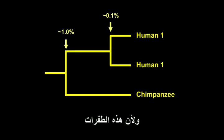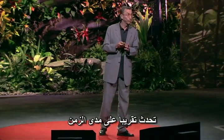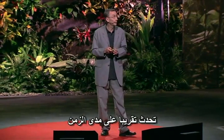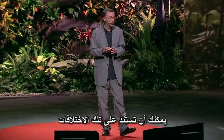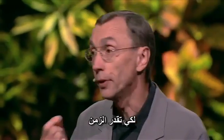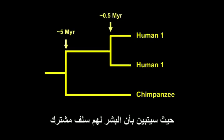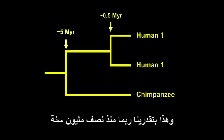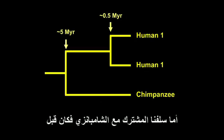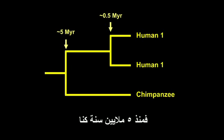Because these mutations happen approximately as a function of time, you can transform these differences into estimates of time — where the two humans typically will share a common ancestor about half a million years ago, and with the chimpanzees it will be in the order of five million years ago.